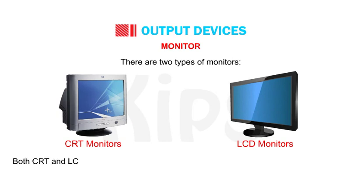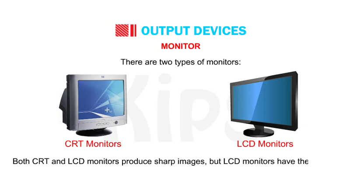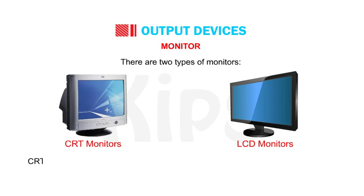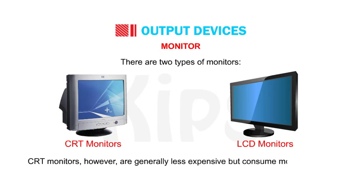There are two types of monitors: CRT monitors and LCD monitors. Both CRT and LCD monitors produce sharp images, but LCD monitors have the advantage of being much thinner, lighter and consuming less electricity. CRT monitors, however, are generally less expensive but consume more electricity.